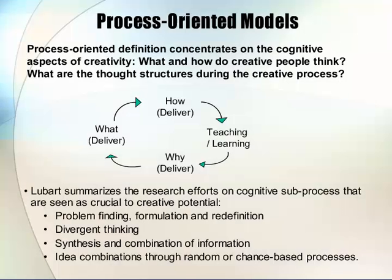Process-oriented models. The process-oriented definition concentrates on the cognitive aspects of creativity: What and how do creative people think? What are the thought structures during the creative process? Lewbridge summarizes the research efforts on cognitive sub-processes seen as crucial to creative potential: problem finding, formulation, and redefinition; divergent thinking; synthesis and combination of information; and idea combinations through random or chance-based processes.